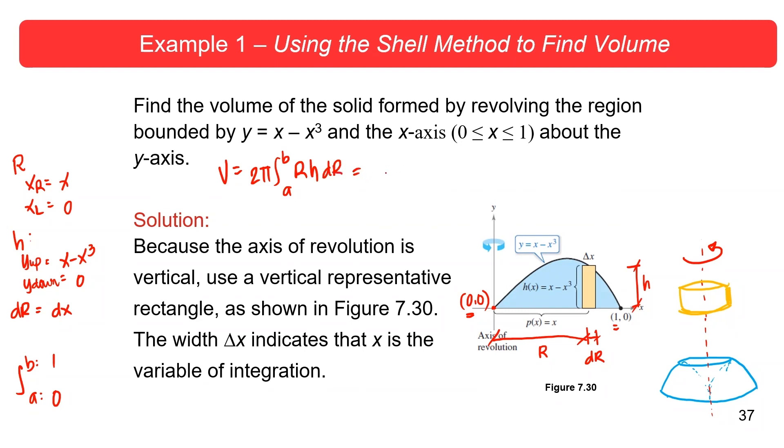Therefore, using the formula 2π integral from a to b of rh dr, this one would be 2π from 0 to 1 of r, which is x minus 0, and then h is x minus x cubed minus 0, and then dr, which is dx. So, because here, look, this one is a bit more difficult than the other two.